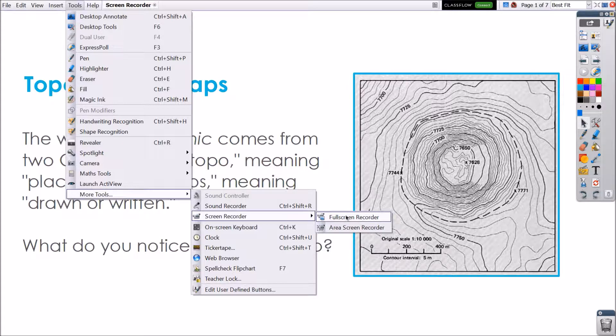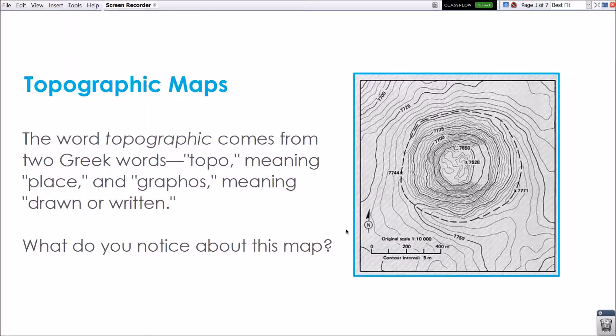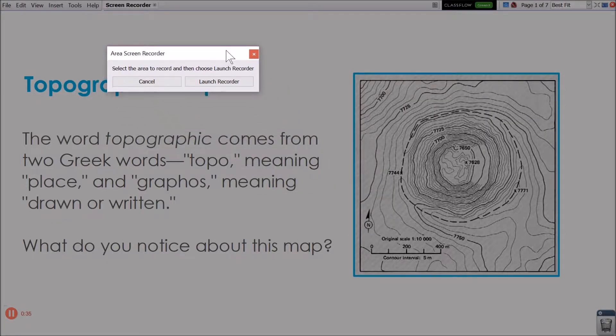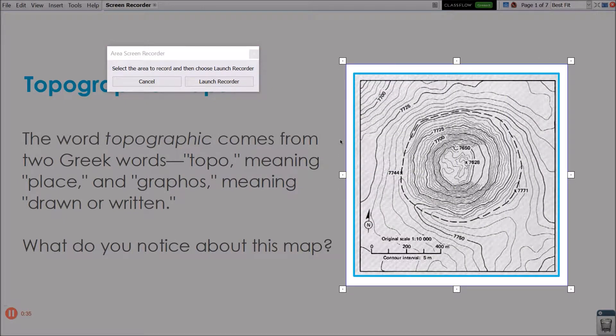You can choose to record the full screen or an area of your screen. I will choose just an area. You can move this window if you need. Next, just drag to create the area you'd like to record and click Launch Recorder.